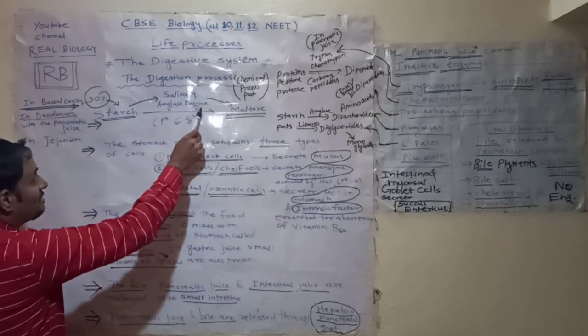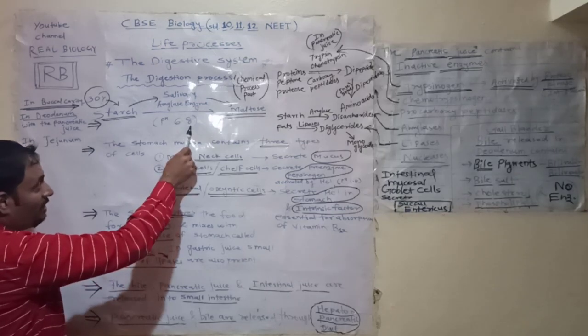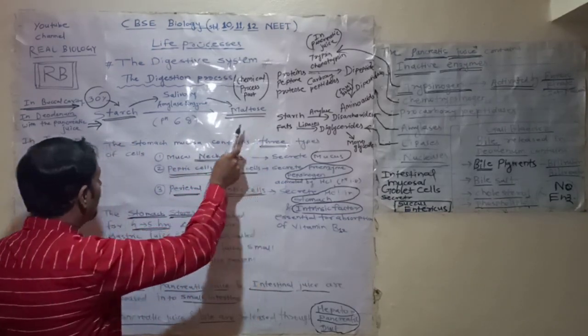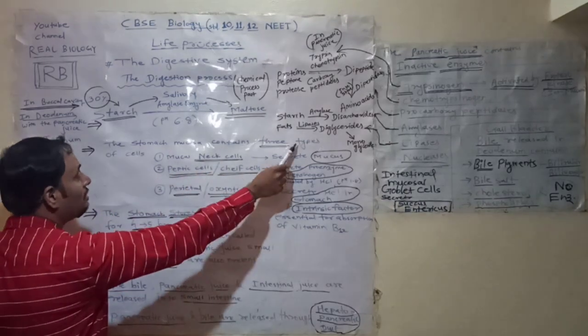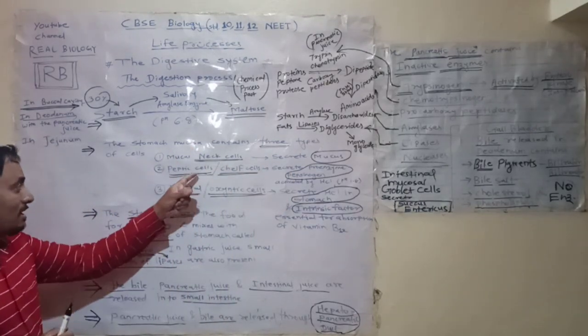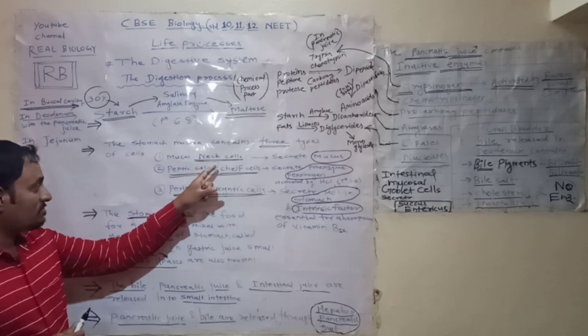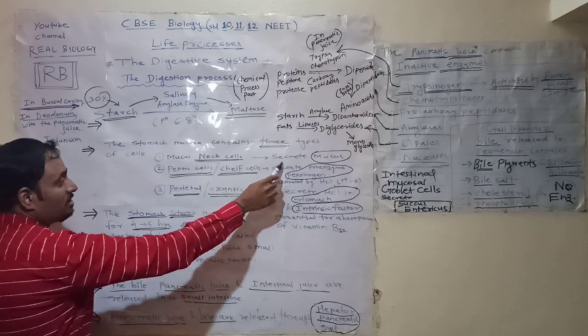The salivary amylase enzyme works at pH 6.8 and converts the starch into maltose. Then the second process starts in the stomach. The stomach mucosa contains three types of cells. The first kind of cells are neck cells which secrete mucus.